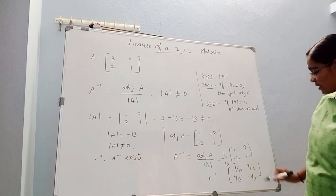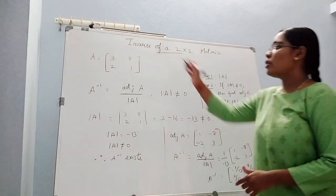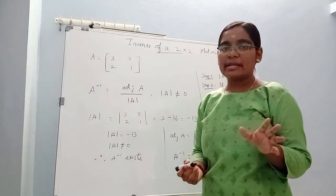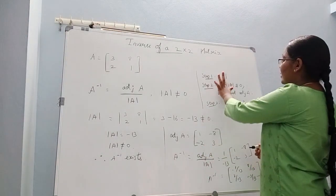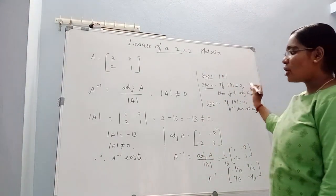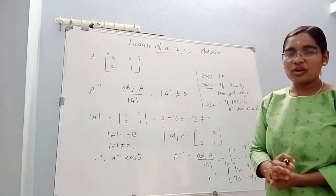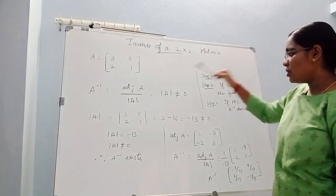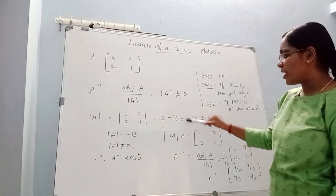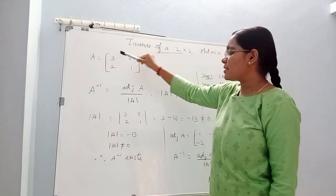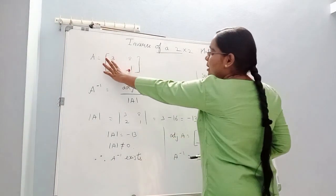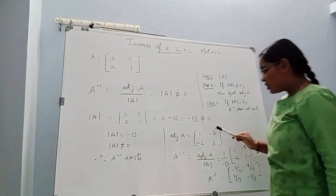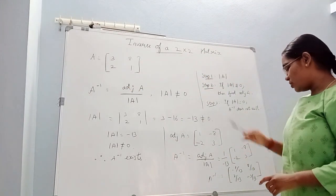So A inverse equals: minus 1 by 13, 8 by 13, 2 by 13, minus 3 by 13. To find a matrix inverse: first find the adjoint, next find the determinant. If the determinant is not equal to 0, the inverse exists. If it equals 0, the inverse does not exist. The determinant value is minus 13, and for the 2x2 matrix, find the adjoint by swapping diagonal elements and changing the signs of the off-diagonal elements.